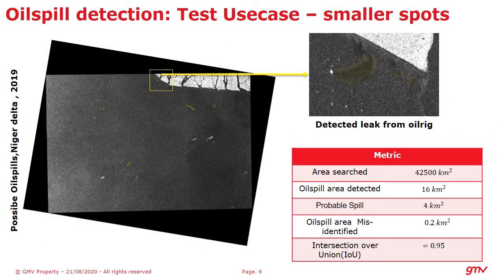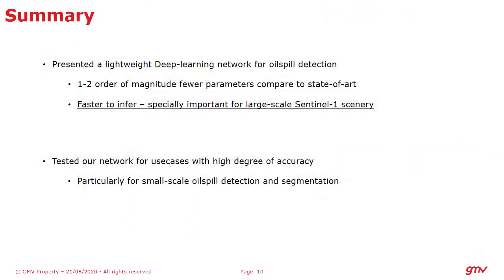For our test case we use a scenario from the Niger Delta, where we found that there are various small-scale oil spills which we detect in totality, but we also detect additional probable spills and a small amount of misidentified oil spills. Overall for this scenario we have an intersection over union of 95 percent. In summary, at GMV we have developed a lightweight deep learning network which is faster to infer and achieves high accuracy as seen in the previous cases.